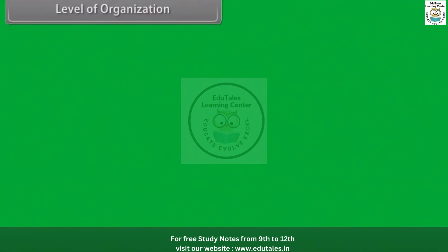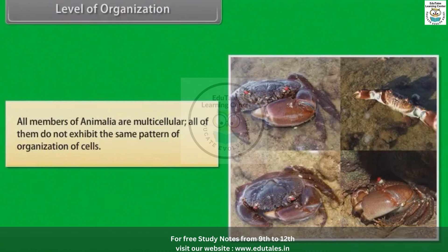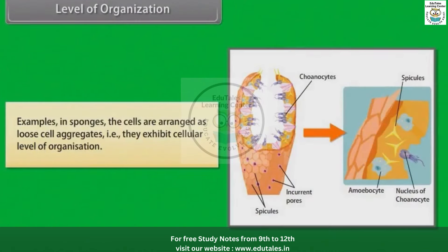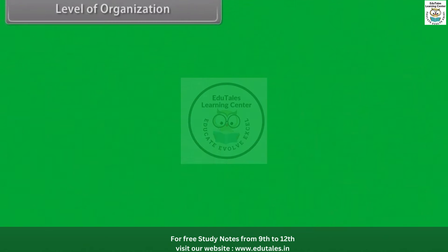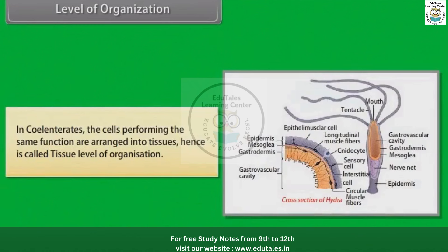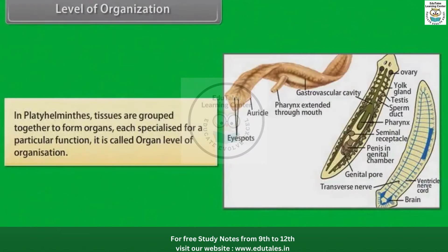Level of organization: All members of Animalia are multicellular, but all of them do not exhibit the same pattern of organization of cells. In sponges, the cells are arranged as loose cell aggregates — they exhibit cellular level of organization. In coelenterates, cells performing the same function are arranged into tissues, hence it is called tissue level of organization. In Platyhelminthes, tissues are grouped together to form organs, each specialized for a particular function — this is called organ level of organization.